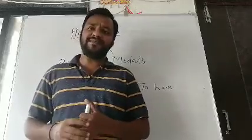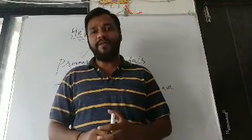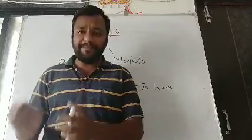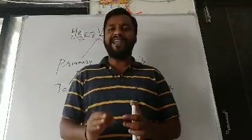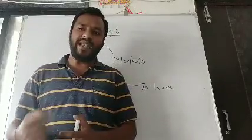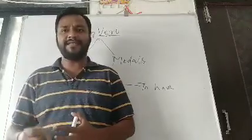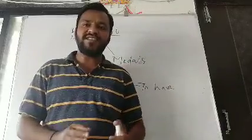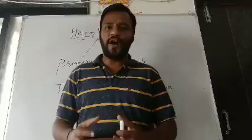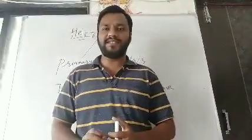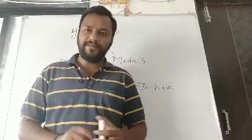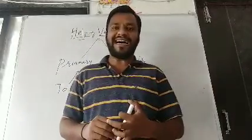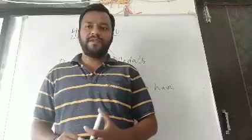Let me revise: 'To be' forms — present: am, is, are; past: was, were; future: will be. 'To do' forms — present: do, does; past: did; future: will do. 'To have' forms — present: have, has; past: had; future: will have.